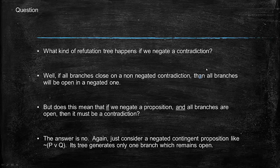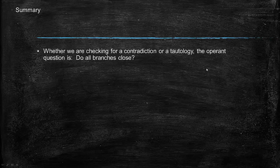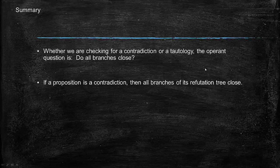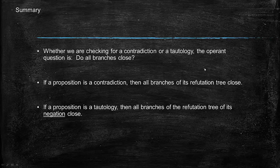To summarize: whether checking for a contradiction or a tautology, the operative question is always whether all the branches close. If a proposition is a contradiction, all branches of its refutation tree close — don't negate it, just run the tree directly. If a proposition is a tautology, all branches of the refutation tree of its negation will close — negate it first, then run the refutation tree. If all branches close, it's a tautology.